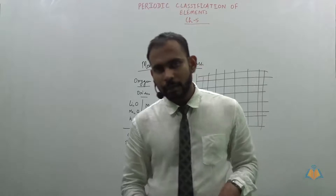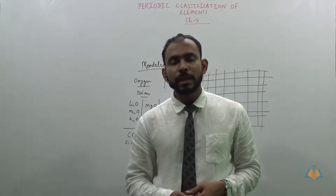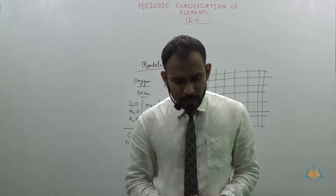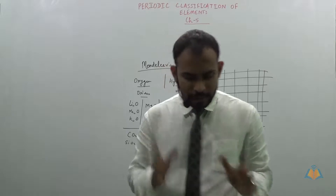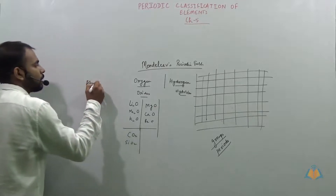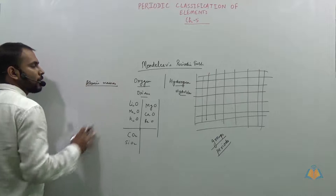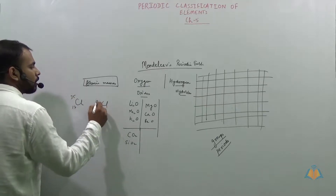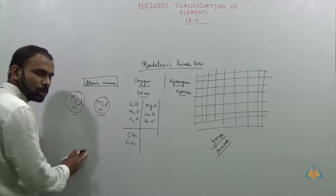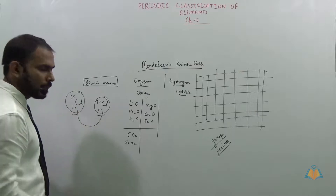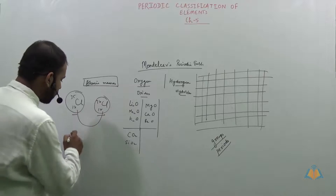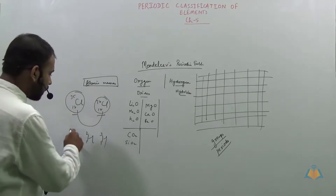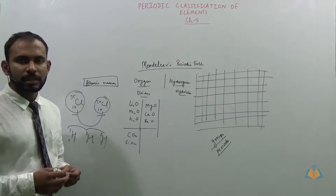However, Mendeleev's periodic table is not followed today; we use the modern periodic table instead. The first limitation is the position of isotopes. Chlorine has two isotopes, carbon has three, hydrogen has three. Since the table is based on atomic masses, chlorine-35 and chlorine-37 would need two different positions, yet they have the same properties — so they cannot be placed at two different positions. This could not be explained.